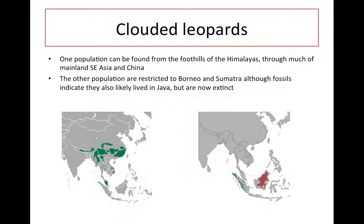One population can be found from the foothills of the Himalayas through much of mainland Southeast Asia and China. The other population is restricted to Borneo and Sumatra, although fossils indicate they likely lived in Java, but they are now extinct. Here's the one population, and the other one is here. They're shown in two separate colours, but they are the same population — it just refers to the fact that they reside on separate islands.